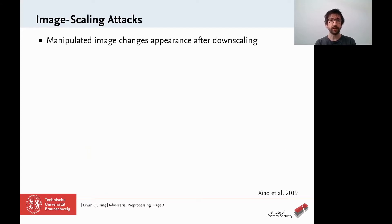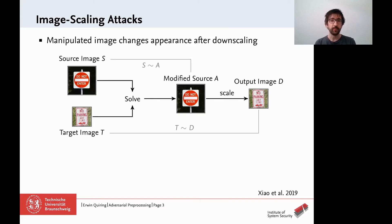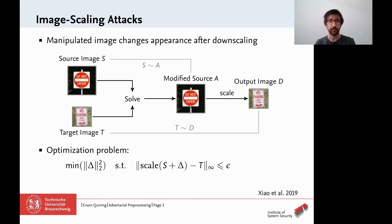Let's consider how an image scaling attack works. The overall objective is that an image changes after downscaling. The adversary has two images: the original source image — a DO NOT ENTER sign — and a target image — a NO PARKING sign. The attacker manipulates the DO NOT ENTER sign such that its modified version before scaling still shows the DO NOT ENTER sign, but becomes the NO PARKING sign after downscaling.